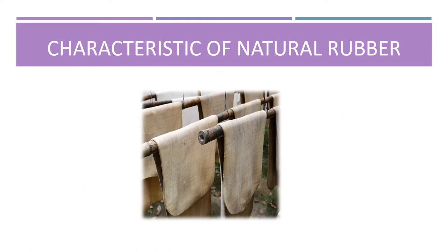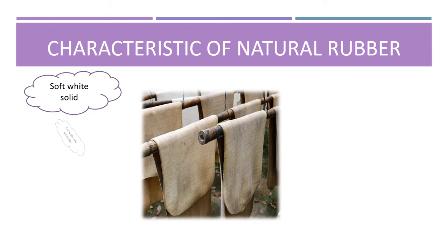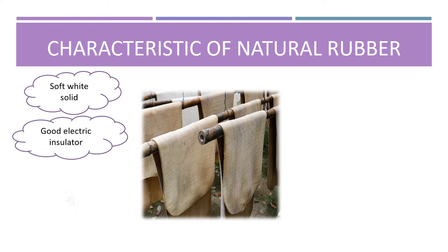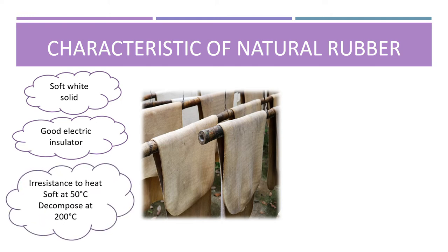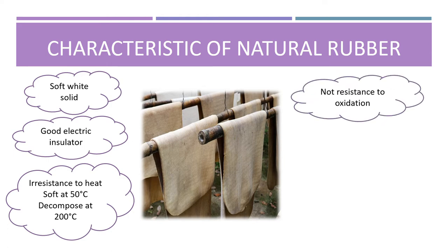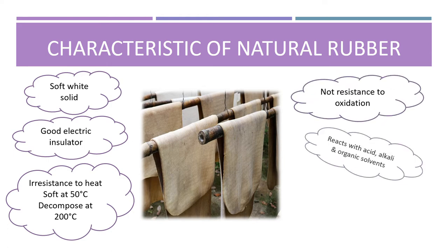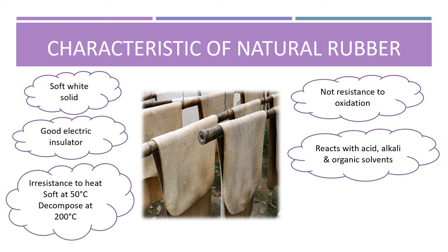Now let's look at the basic characteristics of natural rubber. Natural rubber exists as a soft white solid at room temperature. It is a good electric insulator and is not resistant to heat. When natural rubber is heated above 50 degrees Celsius it melts, and further heating beyond 200 degrees Celsius leads to decomposition. Natural rubber is not resistant to oxidation and it reacts with acid,